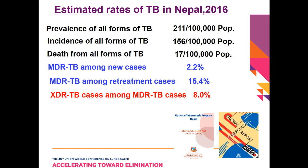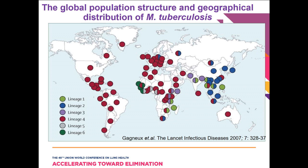The MDR and XDR rates are also high. Among new cases, MDR-TB is 2.2%, among retreatment cases 15.4%, and XDR cases among MDR-TB is 8%. There are six lineages of mycobacterium tuberculosis with different distributions: Lineage 2 (blue) is distributed mainly in East Asian countries and South Africa, while Lineage 4 is distributed in the Americas, West Africa, and European countries.